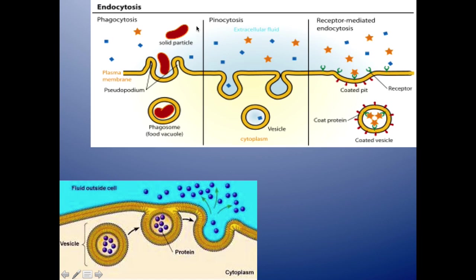In phagocytosis, the particle lands onto the pseudopodium, which is the curved part of the plasma membrane. The plasma membrane then curves around it, forming a vesicle, and the particle gets engulfed — that's phagocytosis, essentially the swallowing of solid material. Pinocytosis is the swallowing of liquid; the liquid enters the pseudopodium, the plasma membrane closes up, a vesicle forms, and the liquid is swallowed.